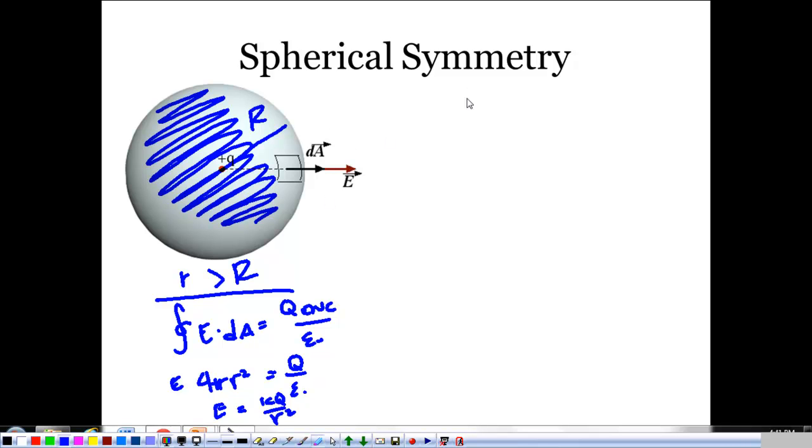It's when we get inside that things get tricky now. When we get inside, when my little r is less than R, my Gaussian surface is here, I'm not enclosing the entire charge distribution. I'm just enclosing a little bit of it, so E dot dA is Q enclosed over epsilon naught. Well, this is still E times 4 pi little r squared, but I have to deal with Q enclosed now.